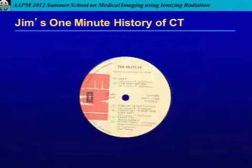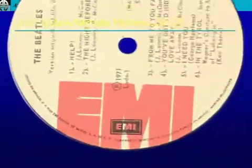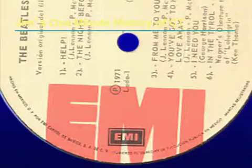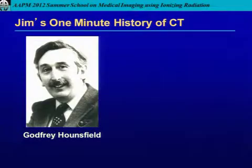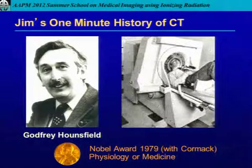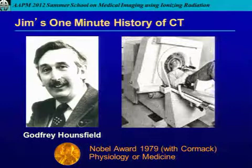The Beatles made a lot of money for EMI — Electric and Musical Industries. As the story goes, EMI decided to take this newly found windfall from the Beatles and invest it in one of their engineers who was working on an interesting project. That engineer was Godfrey Hounsfield, and the project was CT. In 1979, Hounsfield, along with Cormack, won the Nobel Prize for Physiology or Medicine.